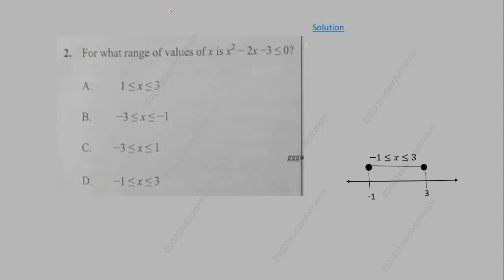Question 2 is a quadratic inequality: for what range of values of x is x² − 2x − 3 ≤ 0? Unlike a regular equation, this gives a range of values rather than just one or two solutions.